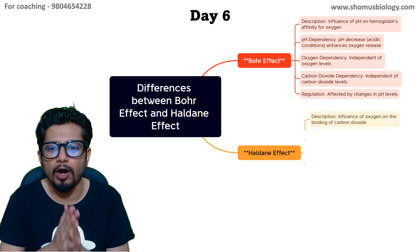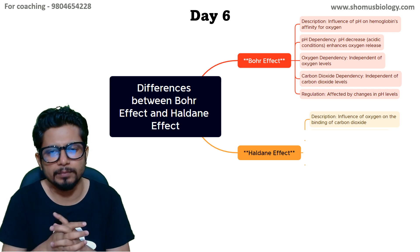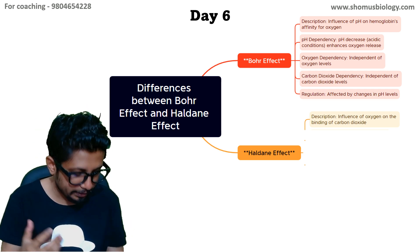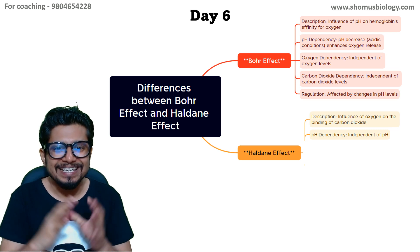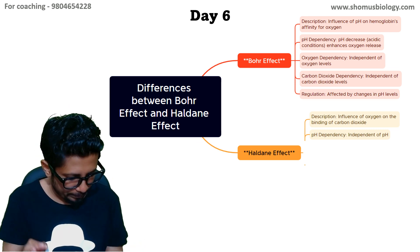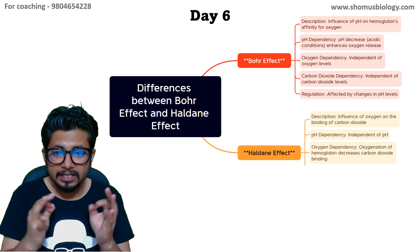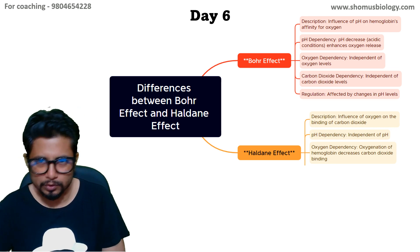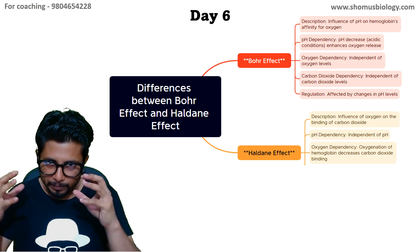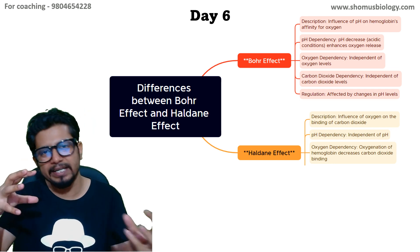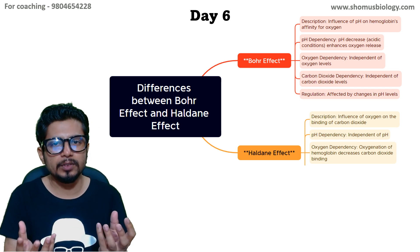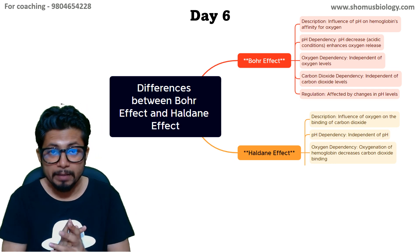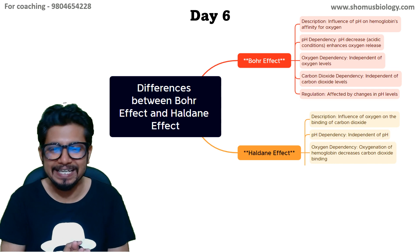Now let's move to the Haldane effect. In the Haldane effect, the focus is on the influence of oxygen on the binding of carbon dioxide to hemoglobin — basically, the influence of oxygen on hemoglobin's affinity for carbon dioxide. The Haldane effect is independent of pH. Regarding oxygen dependency, oxygenation of hemoglobin decreases with carbon dioxide binding. The more carbon dioxide is present in the environment, it will bind to hemoglobin and the chance of hemoglobin binding to oxygen will decrease. If oxygen and carbon dioxide are both present, hemoglobin will compete to bind with either, but it has more affinity to bind to carbon dioxide than oxygen.